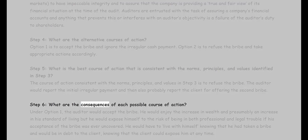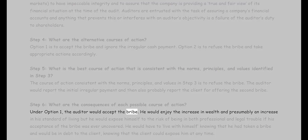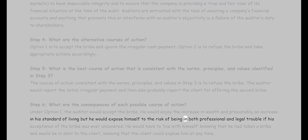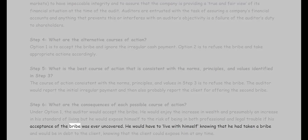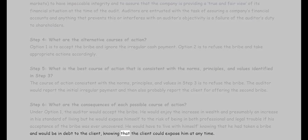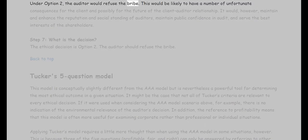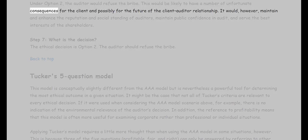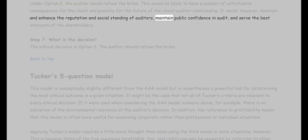Step six — what are the consequences of each possible course of action? Under option one, the auditor would accept the bribe. He would enjoy the increase in wealth and presumably an increase in his standard of living, but he would expose himself to the risk of being in both professional and legal trouble if his acceptance of the bribe was ever uncovered. He would have to live with himself knowing that he had taken a bribe and would be in debt to the client, knowing that the client could expose him at any time. Under option two, the auditor would refuse the bribe. This would be likely to have a number of unfortunate consequences for the client and possibly for the future of the client-auditor relationship. It would, however, maintain and enhance the reputation and social standing of auditors, maintain public confidence in audit, and serve the best interests of the shareholders.